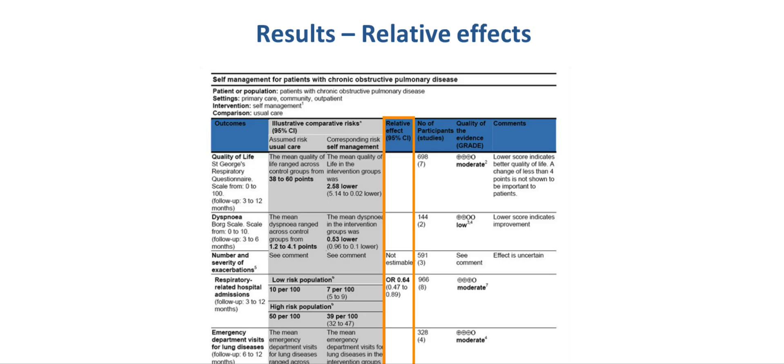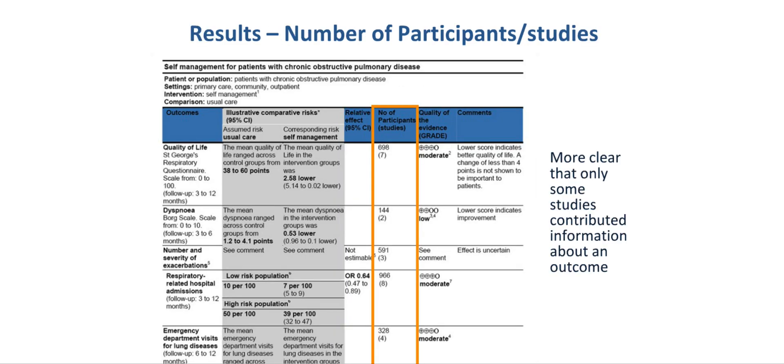The next column shows the relative effect related to the interventional management strategy. In this case, self-management for chronic obstructive pulmonary disease. Only the outcome respiratory-related hospital admissions provided a relative effect estimate. It was an odds ratio of 0.64 with a confidence interval of 0.47 to 0.89. The next column shows the number of participants and the number of studies related to the healthcare question that were included in the systematic review.